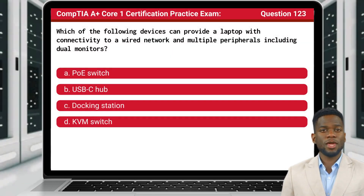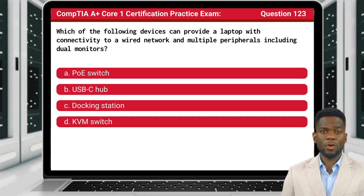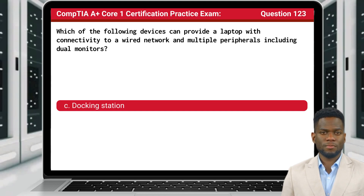Question 123. Which of the following devices can provide a laptop with connectivity to a wired network and multiple peripherals, including dual monitors? The answer is C, Docking Station.